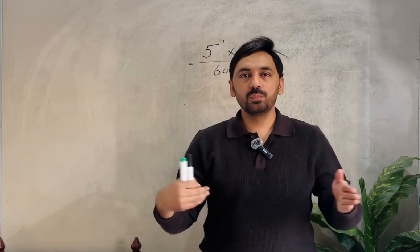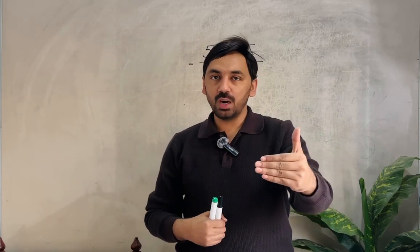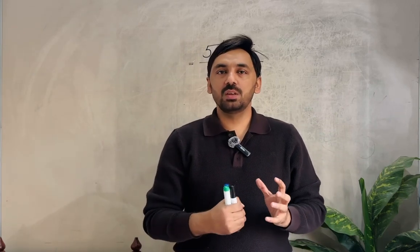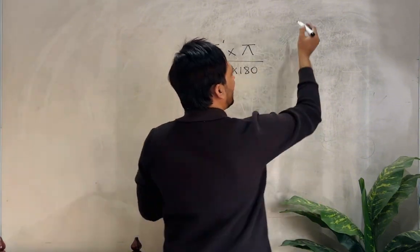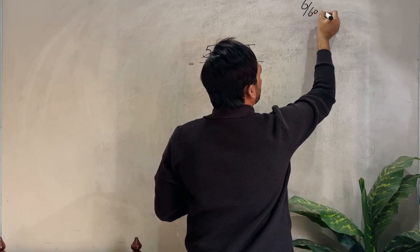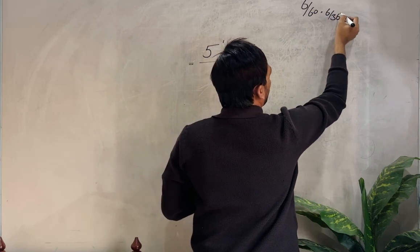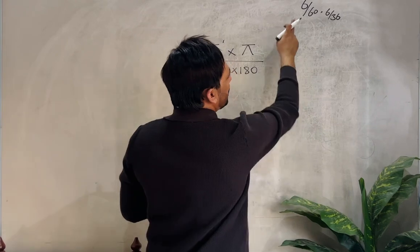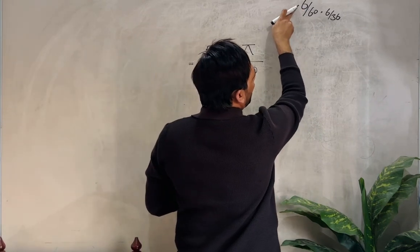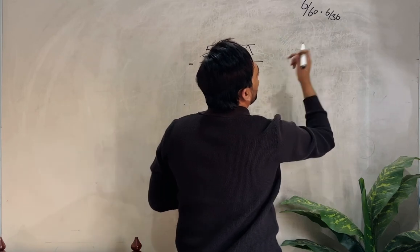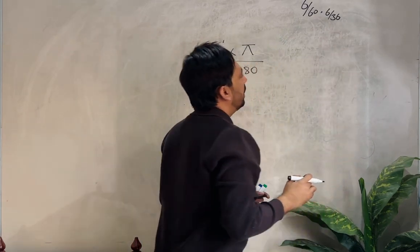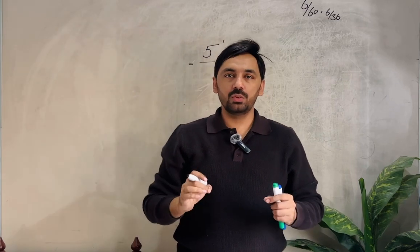You know the brief introduction of the Snellen chart: the test distance between the chart and the patient is six meters, and the notation is in meters. The values on the Snellen chart are like 6/60, 6/36 — I have a detailed video on these topics. You know what this 6 means and what this 60 or 36 means.